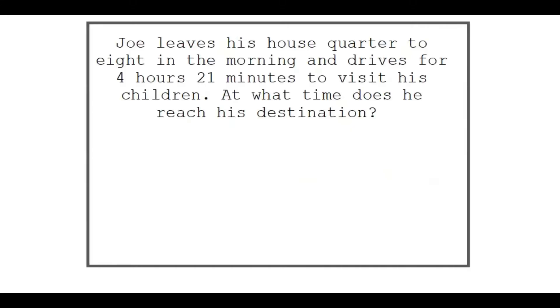Now let's get to adding and subtracting time. We start with an example about Joe. Joe leaves his house at quarter to 8 in the morning — let's write that in digital time: 7:45. He drives for 4 hours 21 minutes to visit his children. At what time does he reach his destination? So what we're doing here is adding, because he starts at 7:45 and drives for 4 hours 21 minutes.